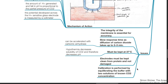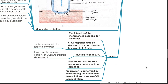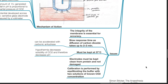The integrity of the membrane is essential for accuracy. Slow response time, as diffusion of carbon dioxide takes up to 2 to 3 minutes, though this can be accelerated with carbonic anhydrase. The electrode must be kept at 37 degrees Celsius. Hypothermia decreases the solubility of carbon dioxide and therefore decreases the pH. Electrodes must be kept clean from protein and not damaged. Calibration is performed by equilibrating the buffer with two solutions of known carbon dioxide concentration.